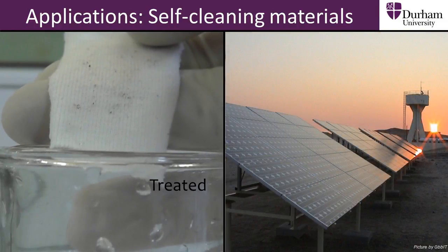The efficiency of solar cells can be reduced if dust and dirt become attached to the cell, preventing maximum absorption of light. With a self-cleaning coating, any water sprayed on the cell will pick up the dust and roll away, leaving the surface clear.